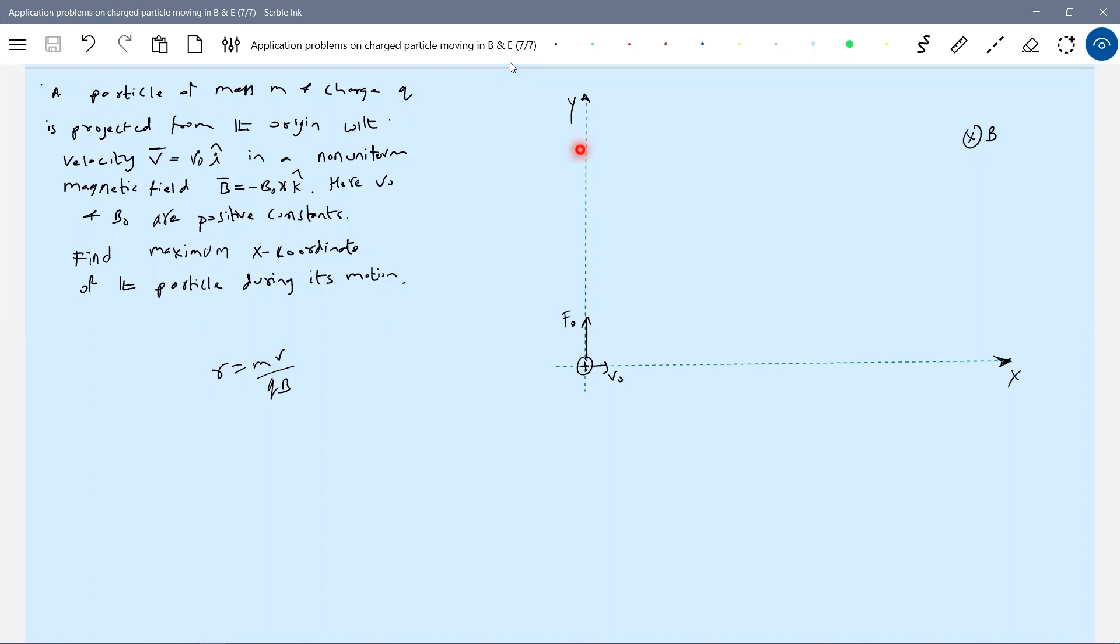Suppose this radius is somewhere here. So will it be a circular path? No, it cannot be circular path here because R is variable. Now it's going to describe some curved path. Rather than just writing equations, we have to analyze from here. The trajectory will be such that the radius of curvature is going to decrease here.